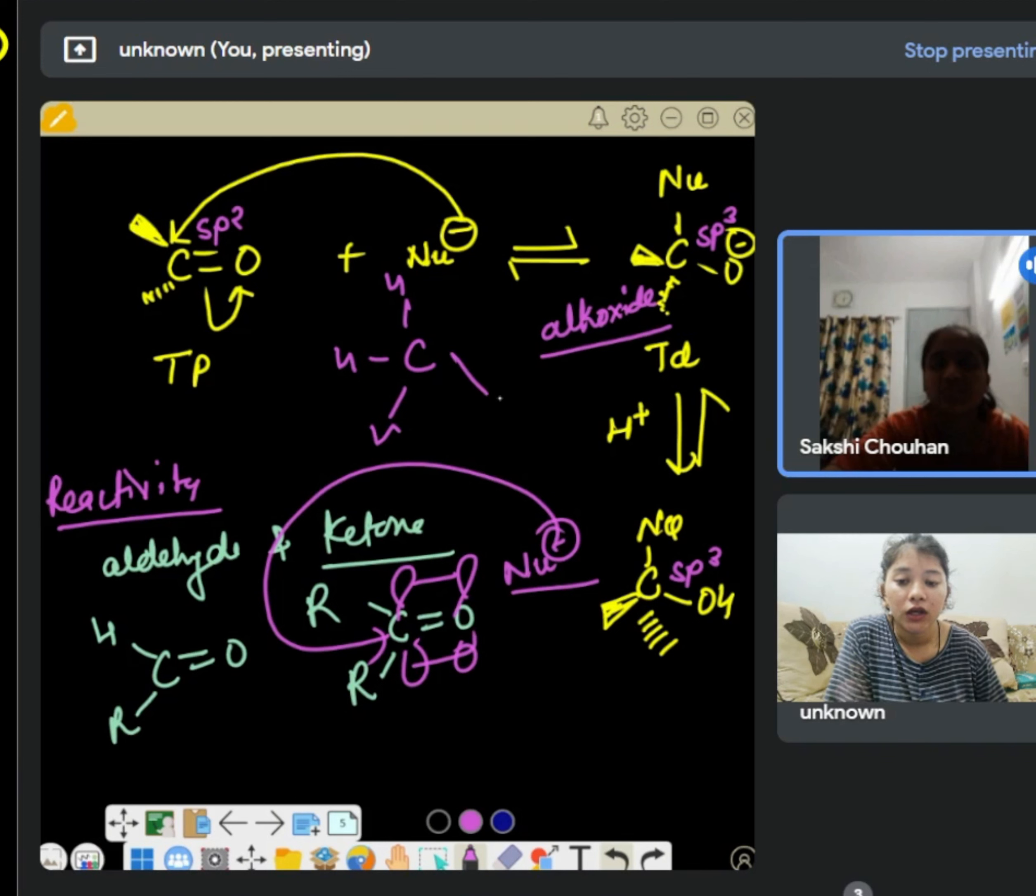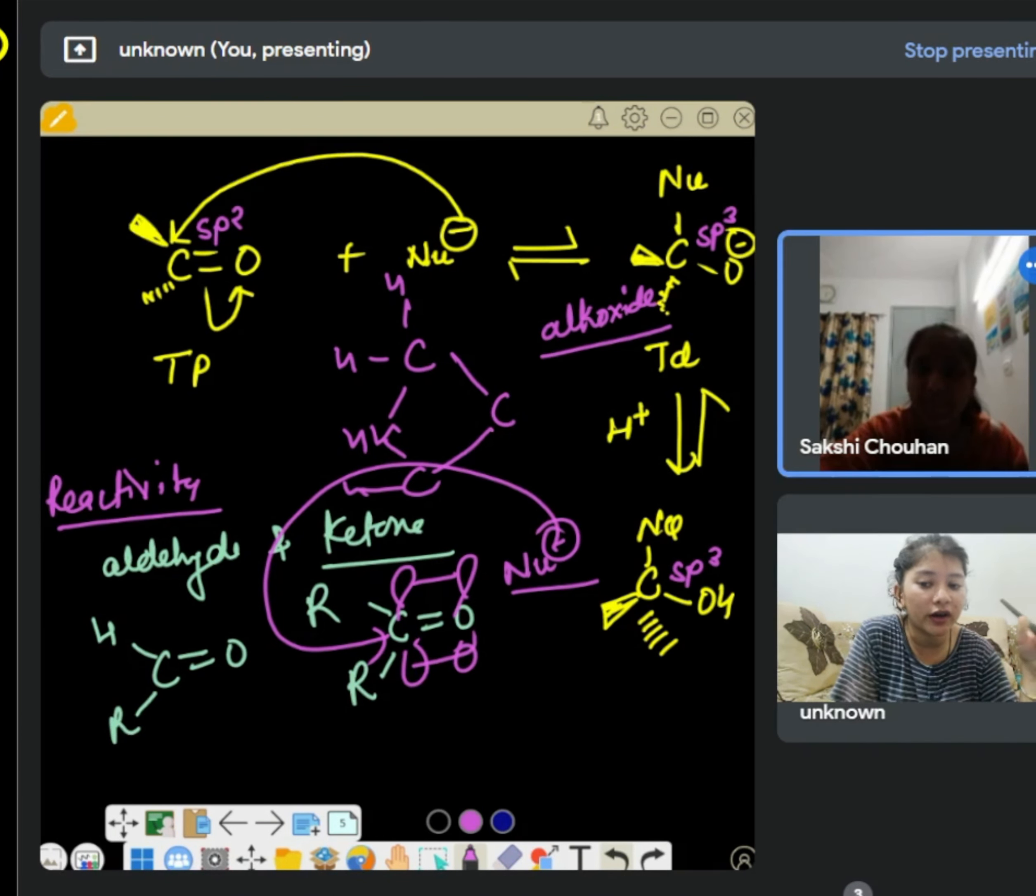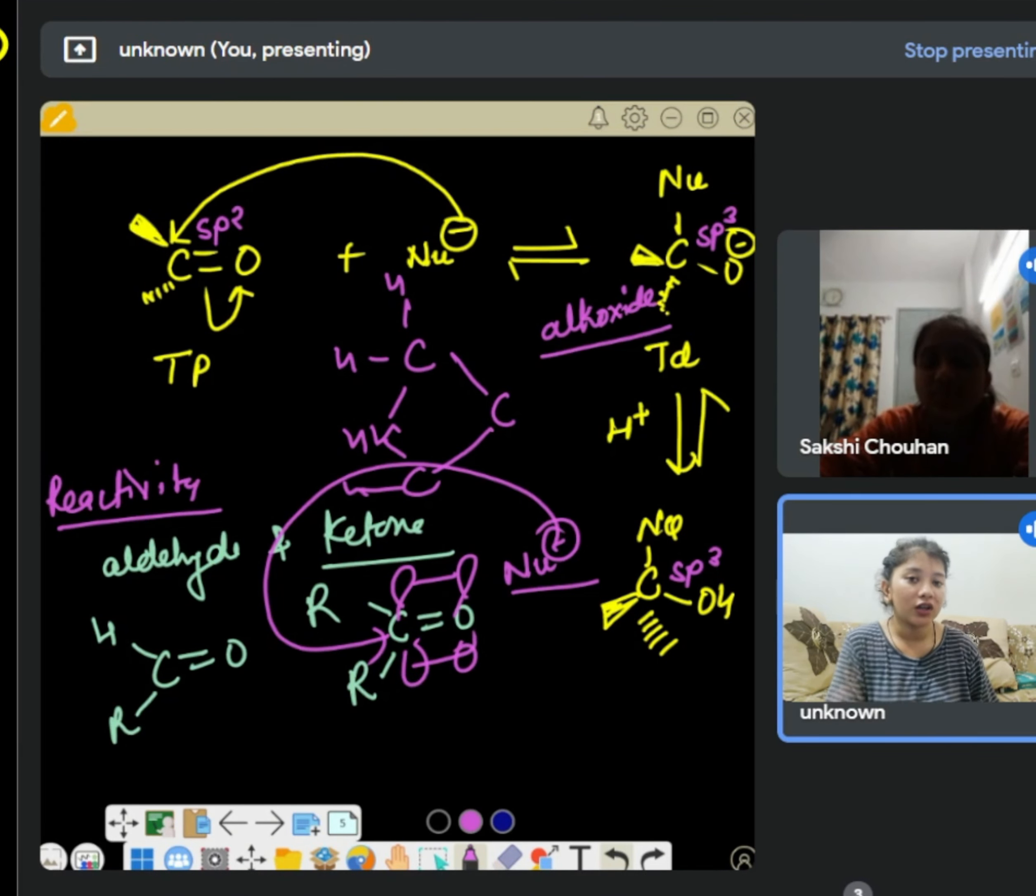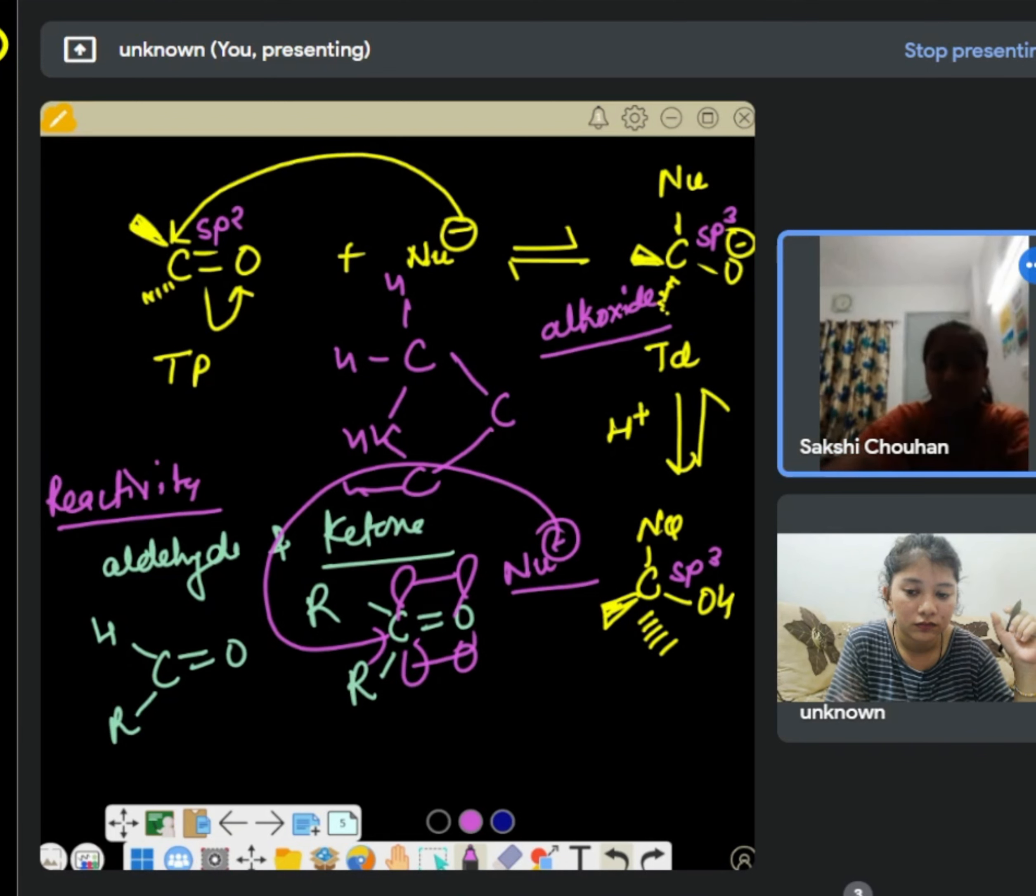Even if you take the acetone case where both sides are CH3, see the carbon and methyl structure will be on both sides of C double bond O, and then CH3. If you look at the path for the nucleophile attack, it's not so easy. This is the first factor, right?